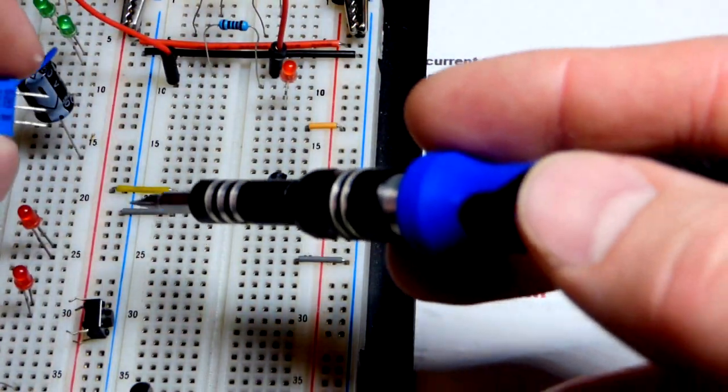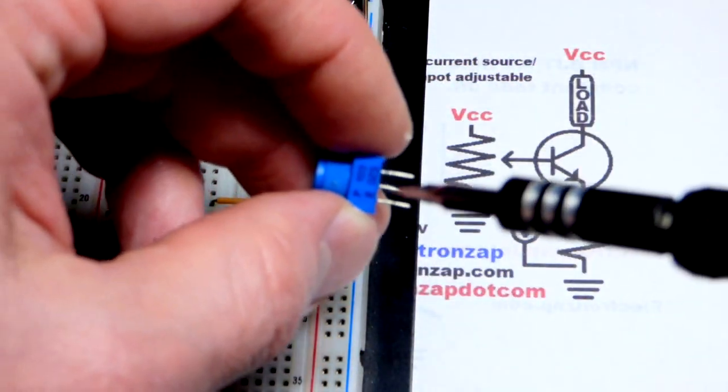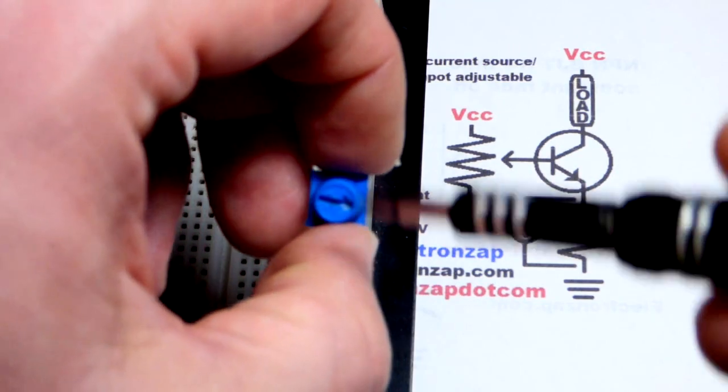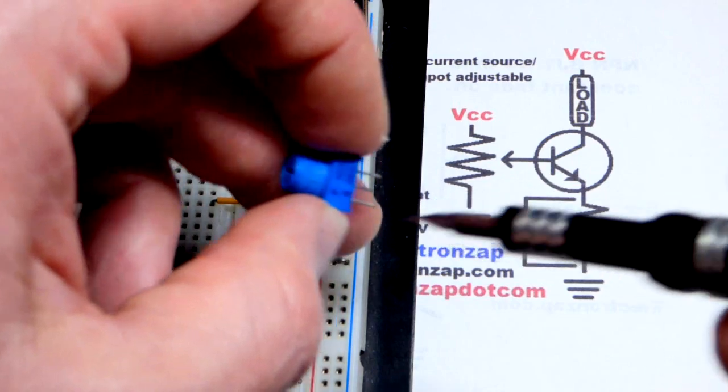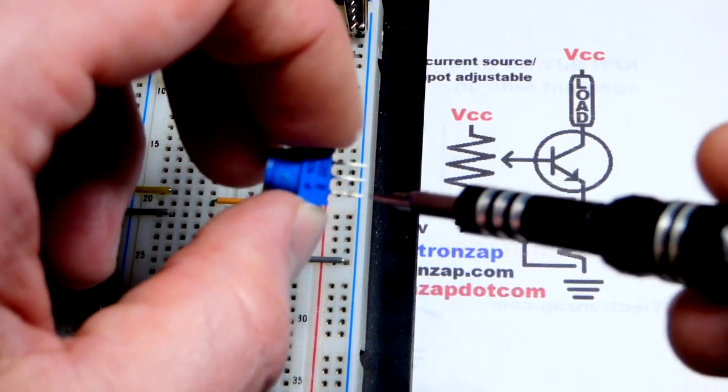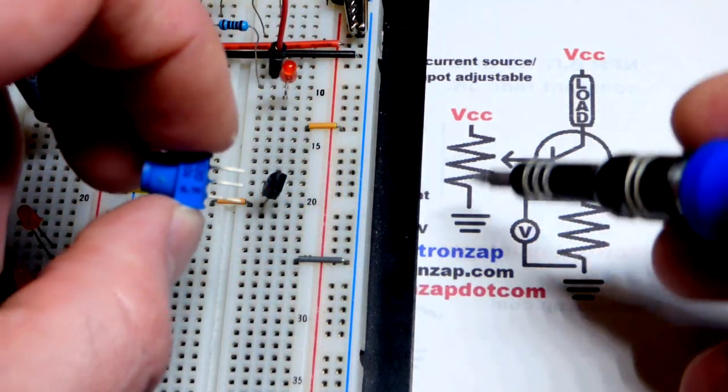And our 0 volt reference point, middle pin there is the wiper, the part of the component that slides across the resistive element. And we have a resistive element.